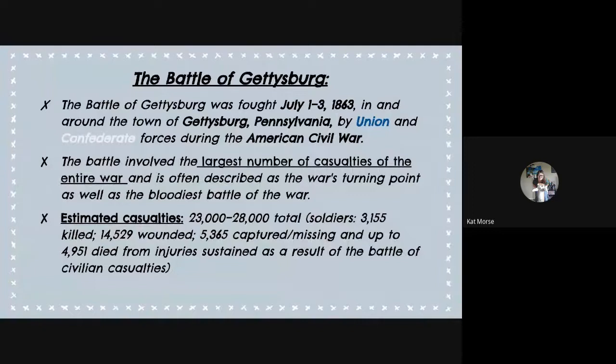The Battle of Gettysburg was fought from July 1st to the 3rd in 1863, and it was in the town of Gettysburg — which didn't really expect to be a battle. It's between the Union in the north and the Confederates in the south, probably the most famous battle of the American Civil War. It involved the largest number of casualties of the entire war and is often described as the war's turning point, as well as the bloodiest battle of the war.